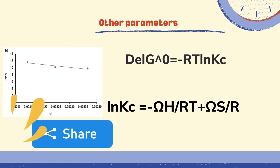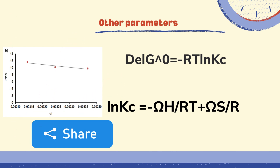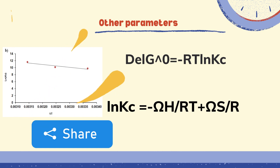You can directly calculate the ΔG⁰ value from this equation. However, in order to calculate other values — for example, ΔH⁰ and ΔS⁰, which are enthalpy change and entropy change — you need to plot ln Kc versus 1/T. From the slope, you can easily calculate ΔH⁰, while from the intercept, you can easily calculate ΔS⁰. This is how you can correctly and easily calculate various thermodynamic parameters.